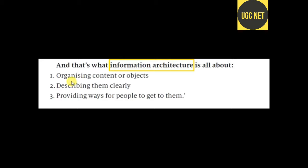Information architecture is all about organizing content or objects, describing them clearly, and providing ways for people to get to them. It is basically the systematic way of presenting information related to users' requirements — what the user wants. According to the user or client, we have to present the information in a systematic way.